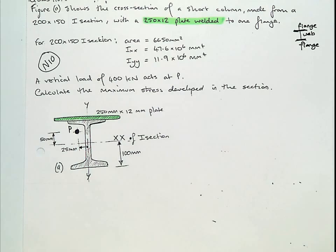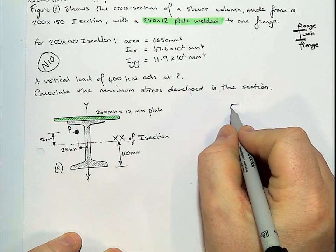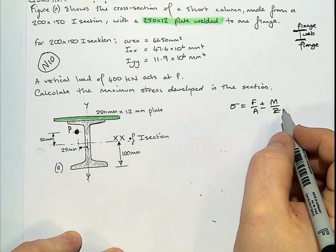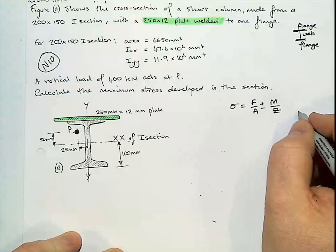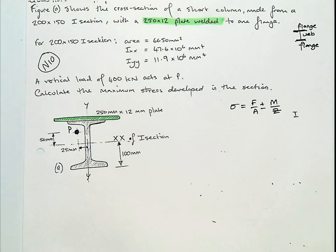Right, overall, we have our stress formula, and this is what we're working towards. The most difficult part is going to be this Z value, or trying to work out what our I value is. So this is why you need your second moment of area, and to get your second moment of area, you need the centre of gravity.